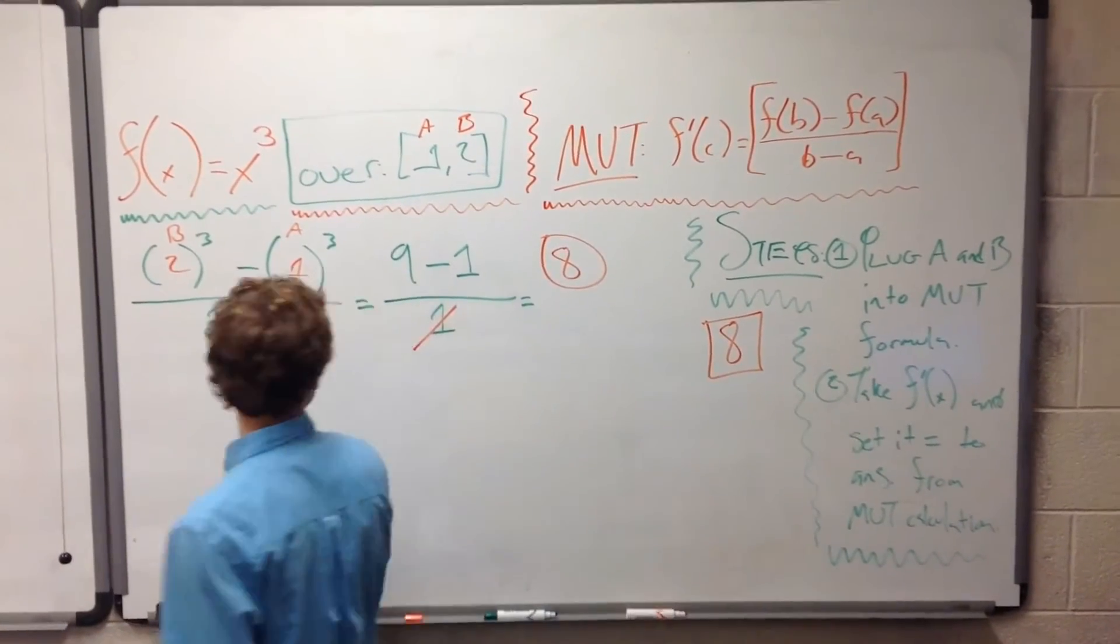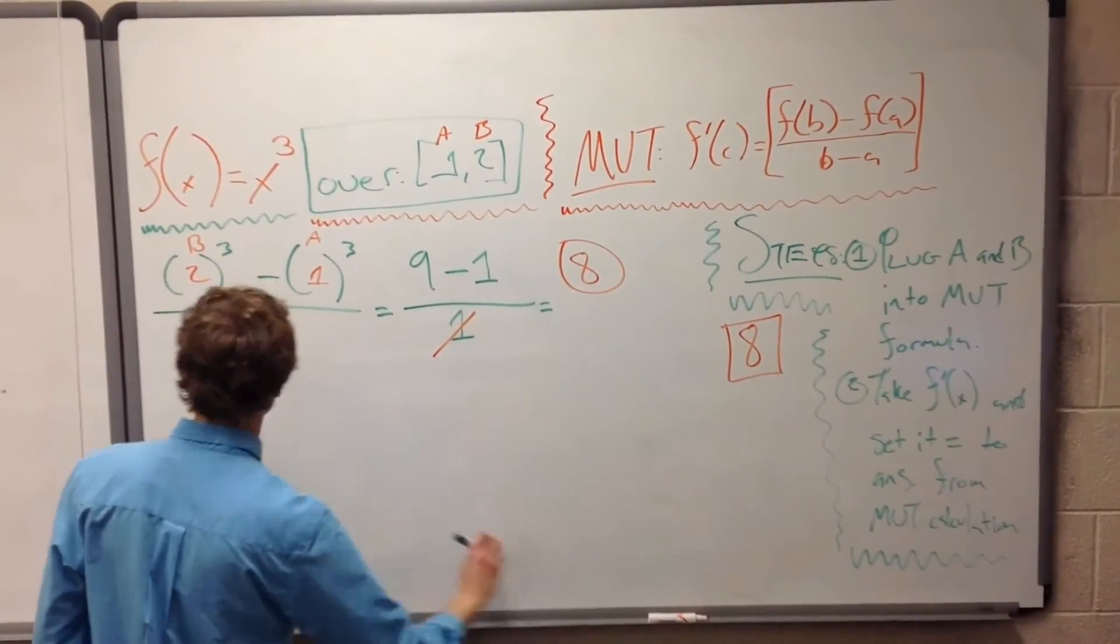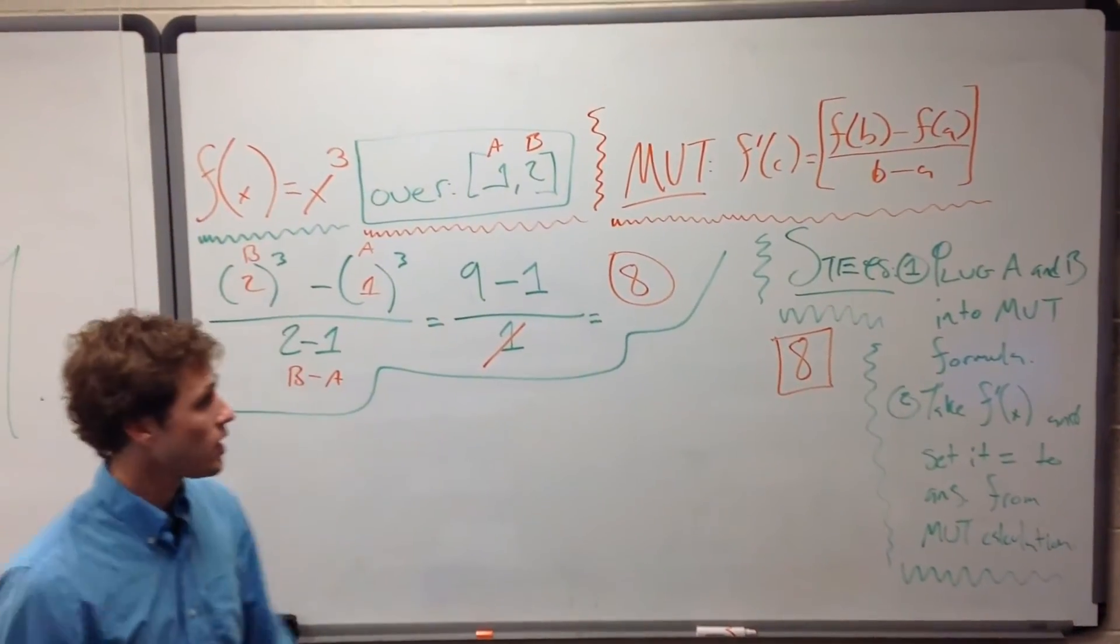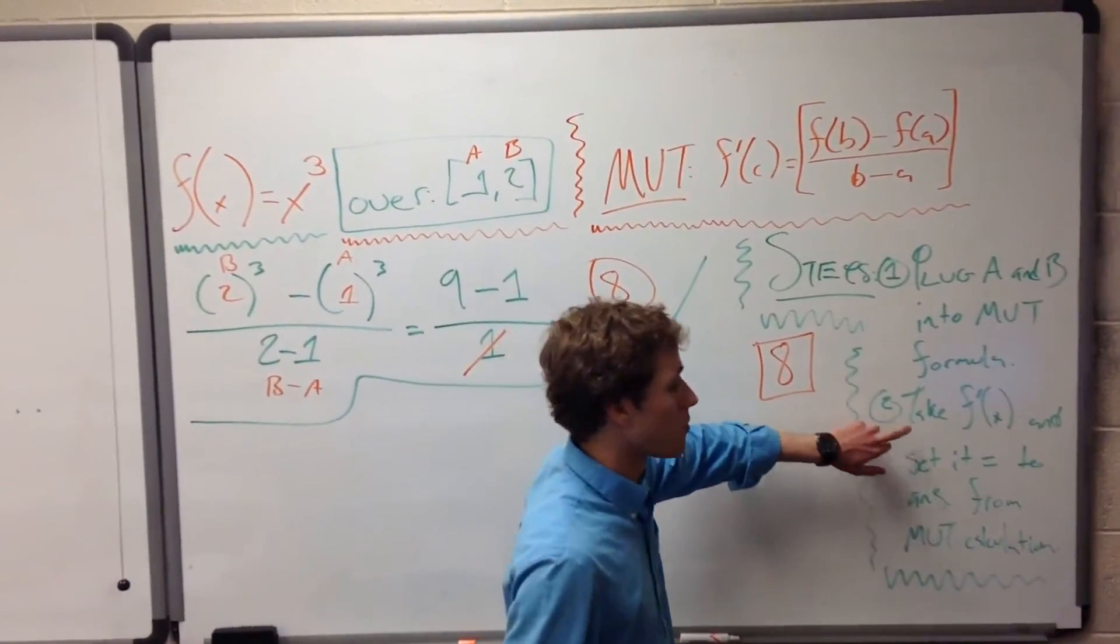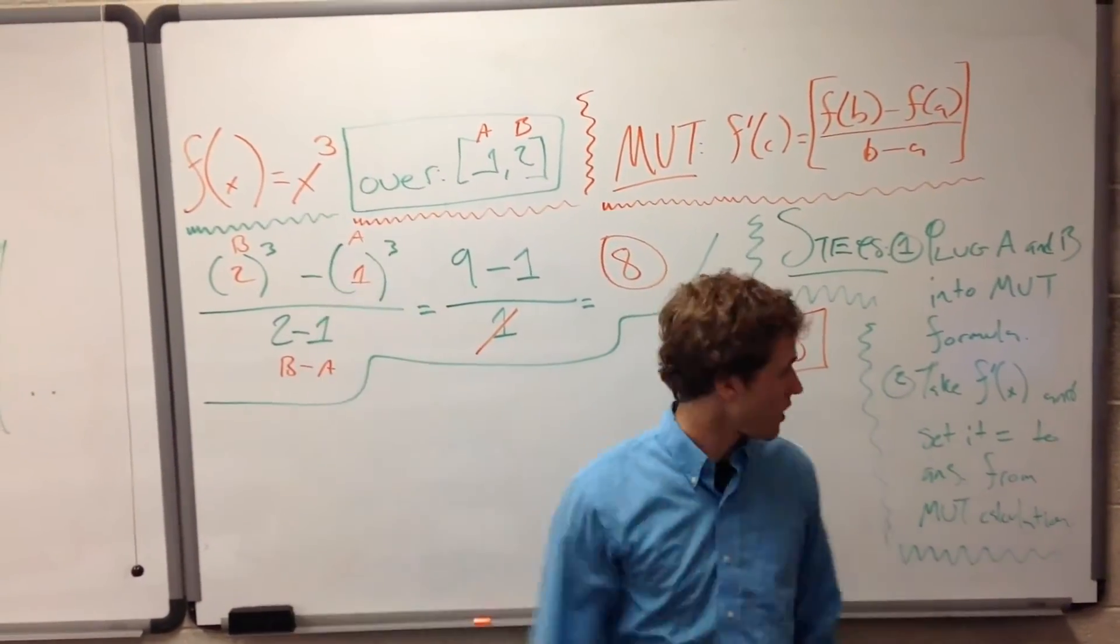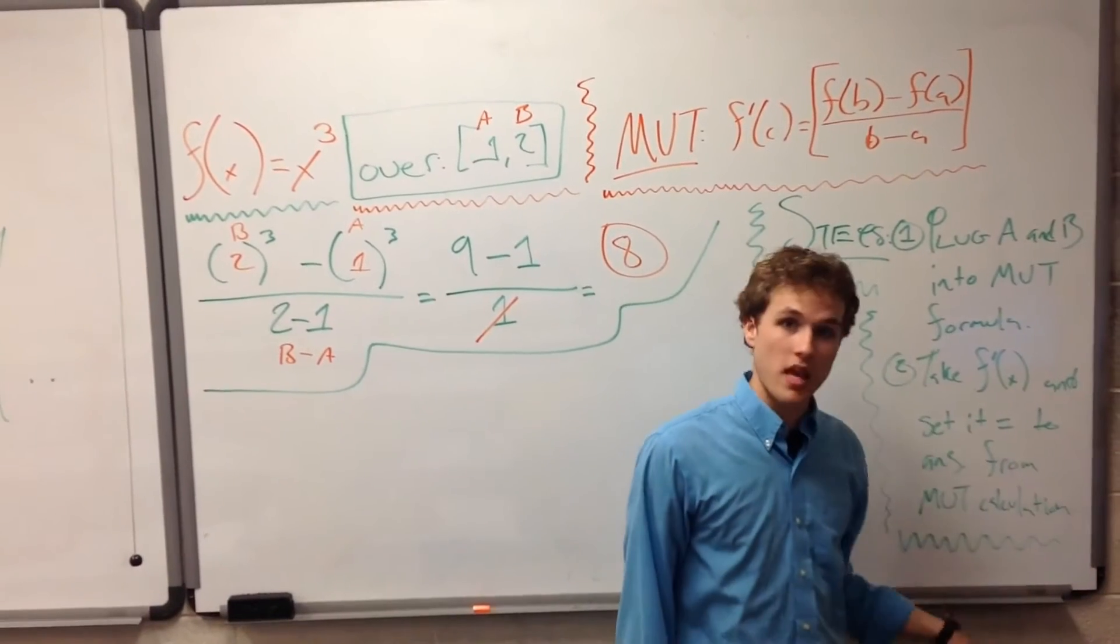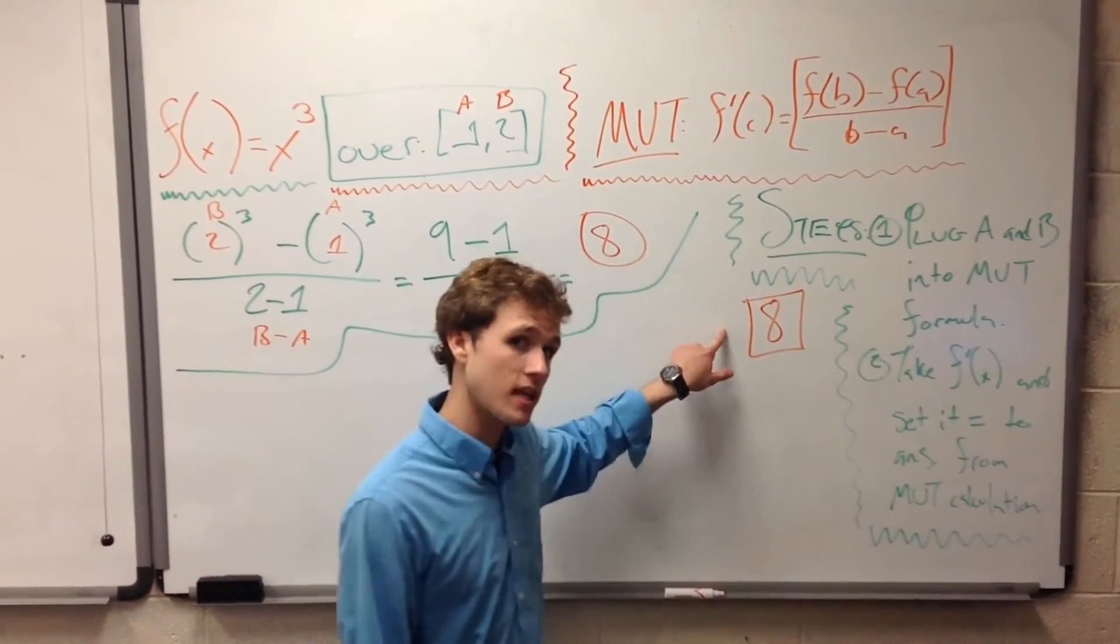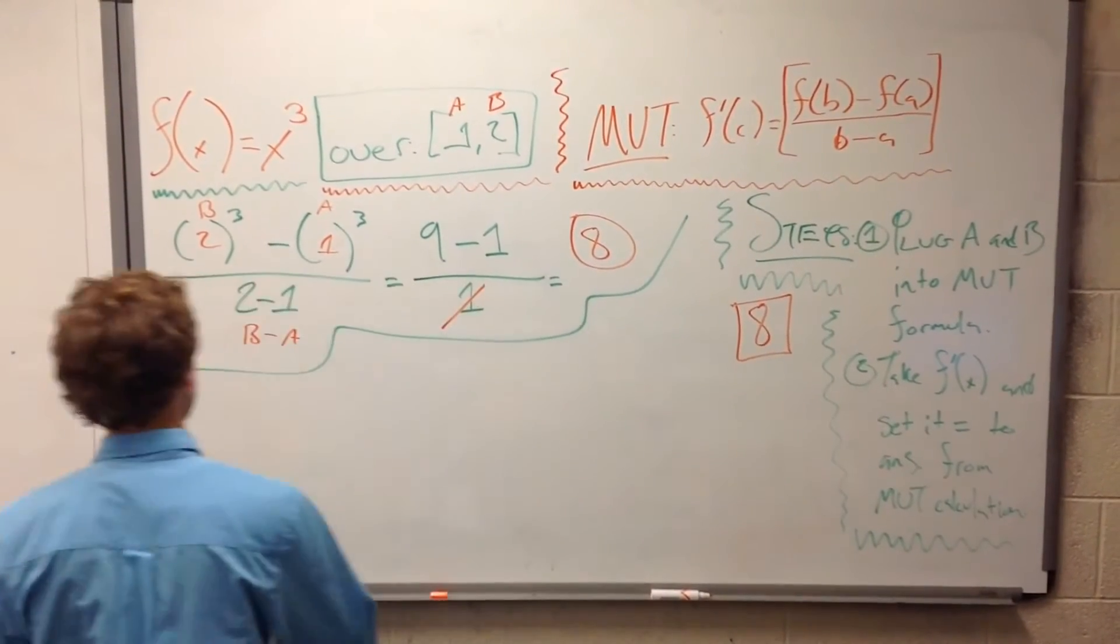So 8 is our first value of importance. Let's go ahead and keep that down. We can just keep this work up here for reference while we go on and do the second step, which is to take f'(x), take prime of the original function, or take its derivative, and then set it equal to the answer from your mean value theorem initial calculation. So we're going to be setting it equal to 8.